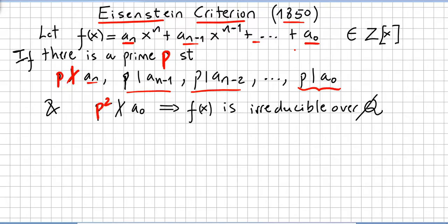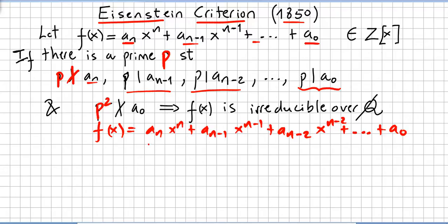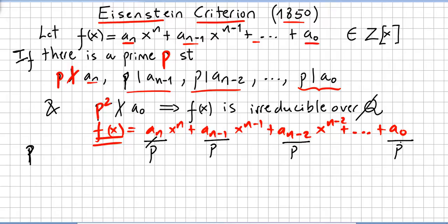and p² does not divide a_0, that implies f(x) is irreducible over the rationals. Basically, you find a prime p, check that p does not divide a_n, but p divides a_(n-1), a_(n-2), and so on down to a_0, and p divides a_0 but p² does not divide a_0.